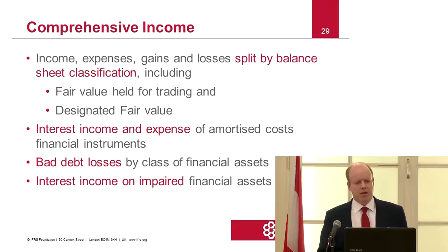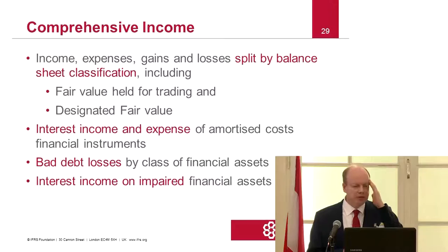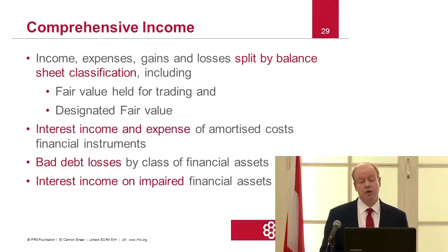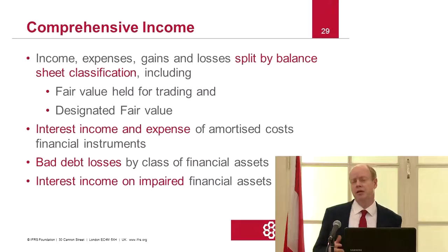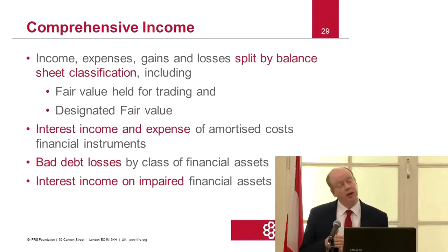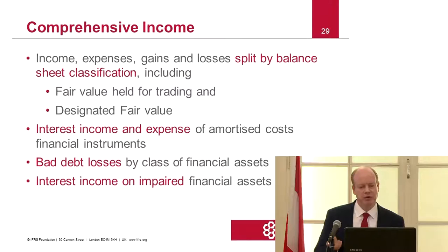For the income statement, income, expenses, gains and losses need to be split by balance sheet classification and between fair value held for trading and those designated at fair value. Disclosure on interest income and expense of instruments held at amortised cost is also required. It's worth noting that if you analyse many large European banks, it can be easily over 50% of the balance sheet that is actually at amortised cost, as traditional loans under IAS 39 and the new IFRS 9 will continue to be measured at amortised cost.